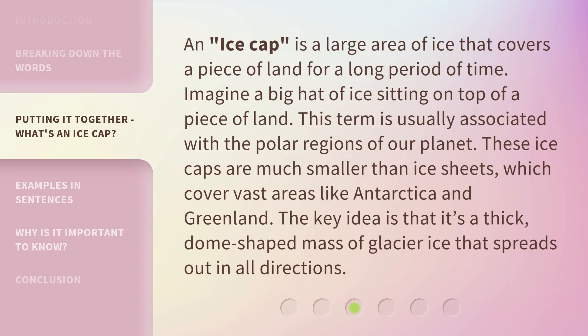An ice cap is a large area of ice that covers a piece of land for a long period of time. Imagine a big hat of ice sitting on top of a piece of land. This term is usually associated with the polar regions of our planet. These ice caps are much smaller than ice sheets, which cover vast areas like Antarctica and Greenland. The key idea is that it's a thick, dome-shaped mass of glacier ice that spreads out in all directions.